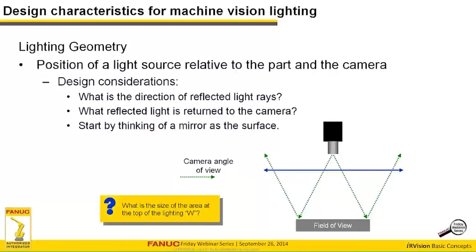Starting with lighting geometry — the position of the light source relative to the part and the camera. This is probably the most important thing you can take away for beginning lighting design. Not every light will succeed mounted around the camera as a ring light, and not every light will succeed down at the level of the conveyor. We need to understand how light works and then ask: what is the direction of the reflected light ray?